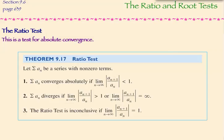Hi boys and girls. This video comprises the lecture for section 9-6, the ratio and root test, starting on page 639. These are the final two tests that we're going to learn for convergence and divergence, and it will sort of complete the body of knowledge that we've been acquiring since we started chapter 9. So let's see what the ratio test is.